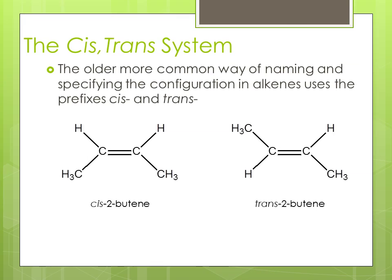The cis-trans system. The older, more common way of naming and specifying the configuration in alkenes uses the prefixes cis and trans. The molecules below are labeled cis-2-butene and trans-2-butene respectively.